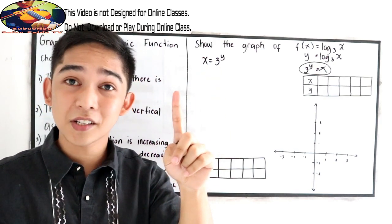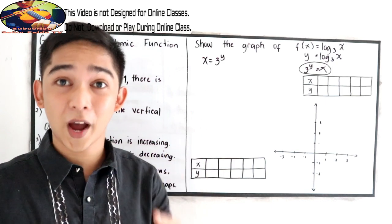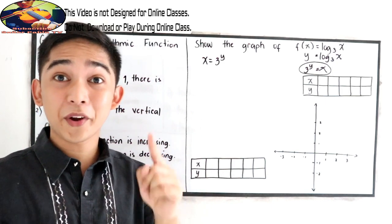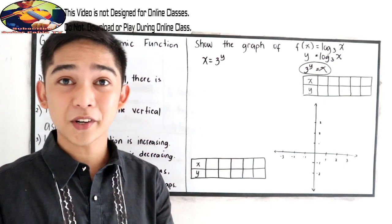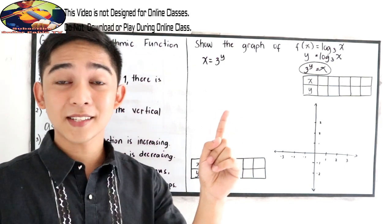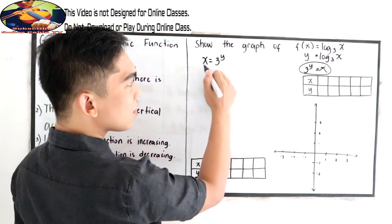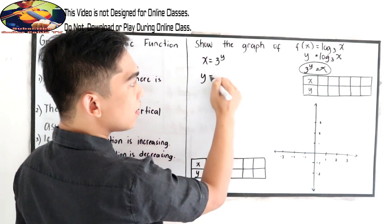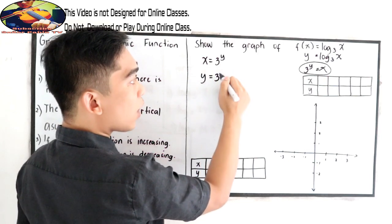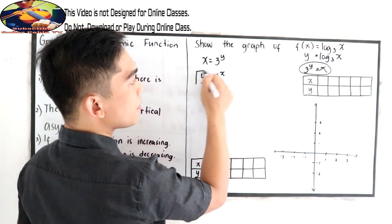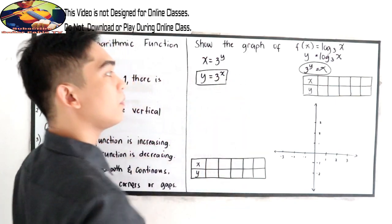So to get the inverse, interchange x and y. If you want to review the process in getting the inverse, go to our playlist and find the inverse function. So interchange x will become y. Then our y will become x. This will be our basis.